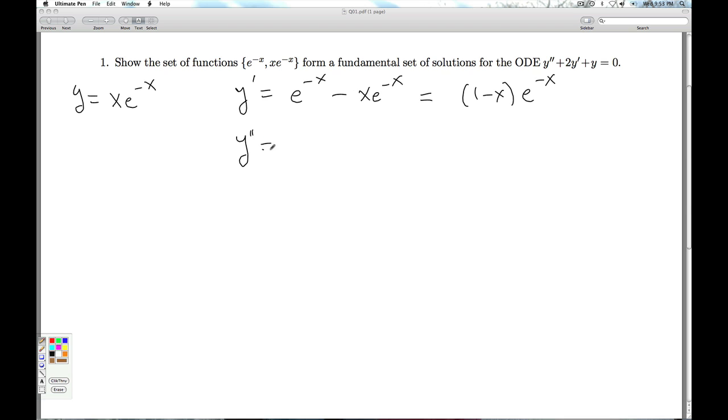Then I can find the second derivative, minus e to the minus x plus, I guess, minus (1 minus x)e to the minus x. And once again, I can factor out that e to the minus x. And I have negative 1 minus 1 is negative 2 plus x. So I get (x minus 2)e to the minus x.